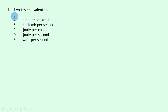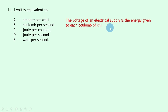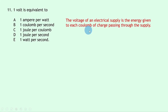Question 11: one volt is equivalent to what? Voltage is defined as the energy given to each coulomb of charge passing through the supply. Energy is in joules and charge in coulombs, so one volt equals one joule per coulomb. The answer is C.